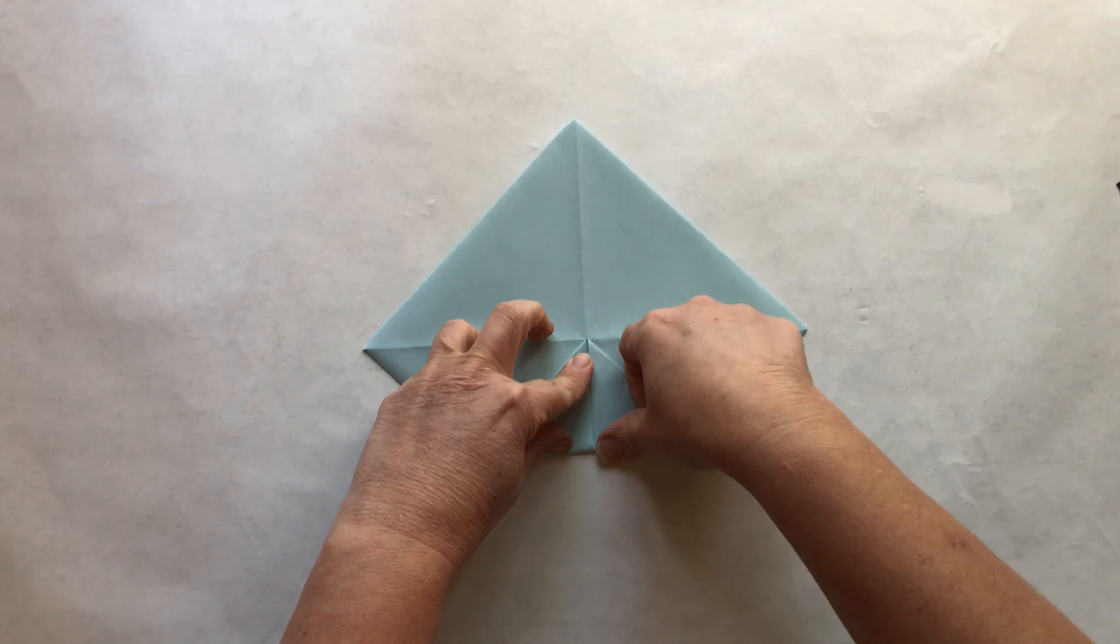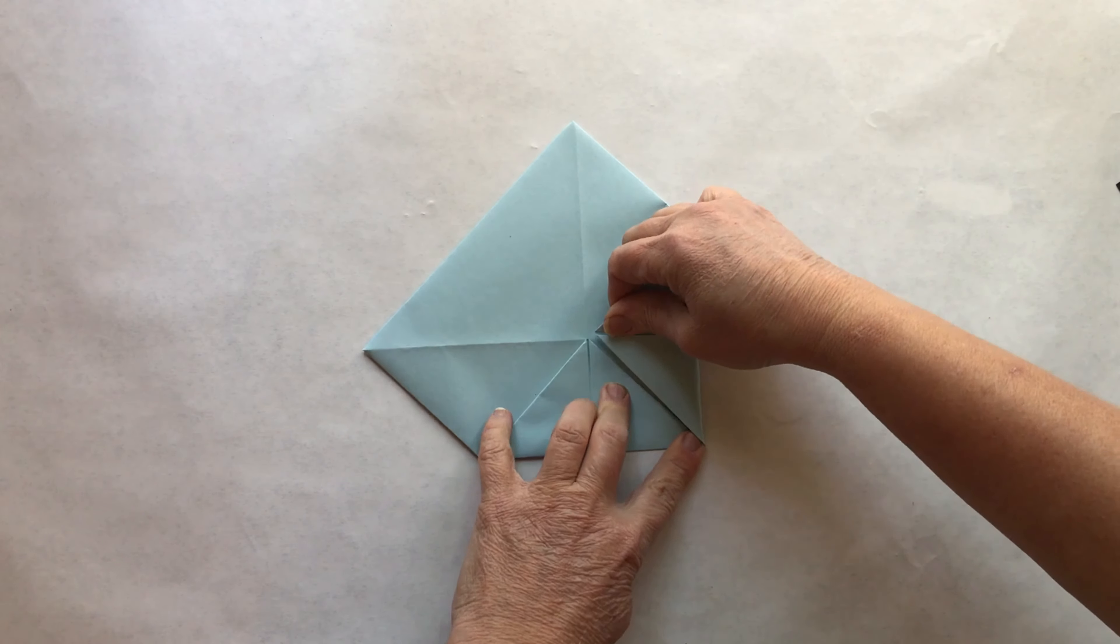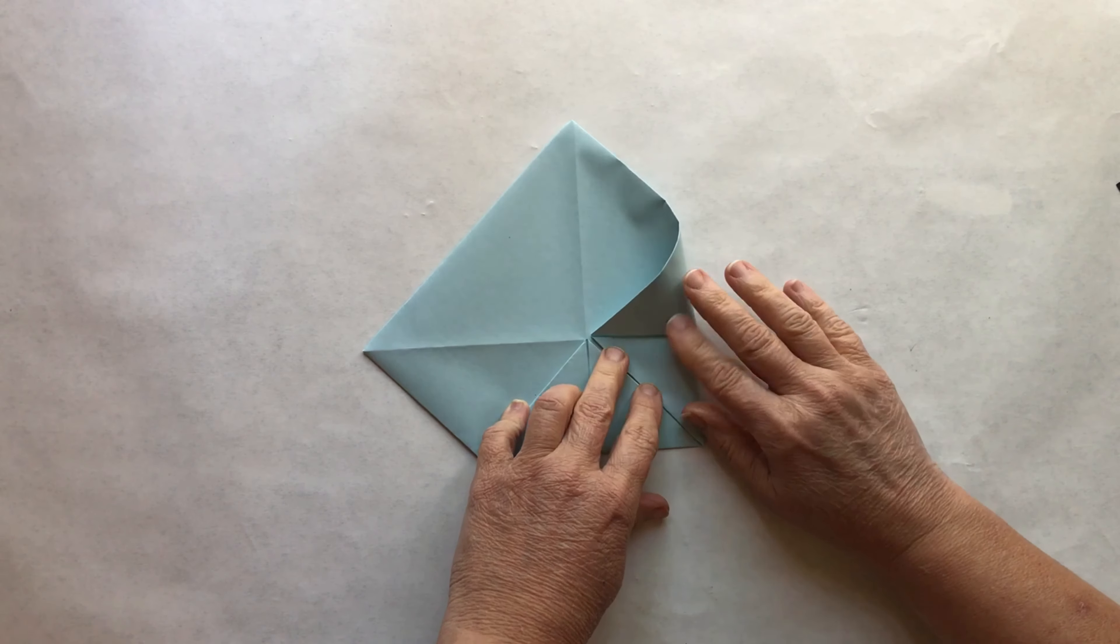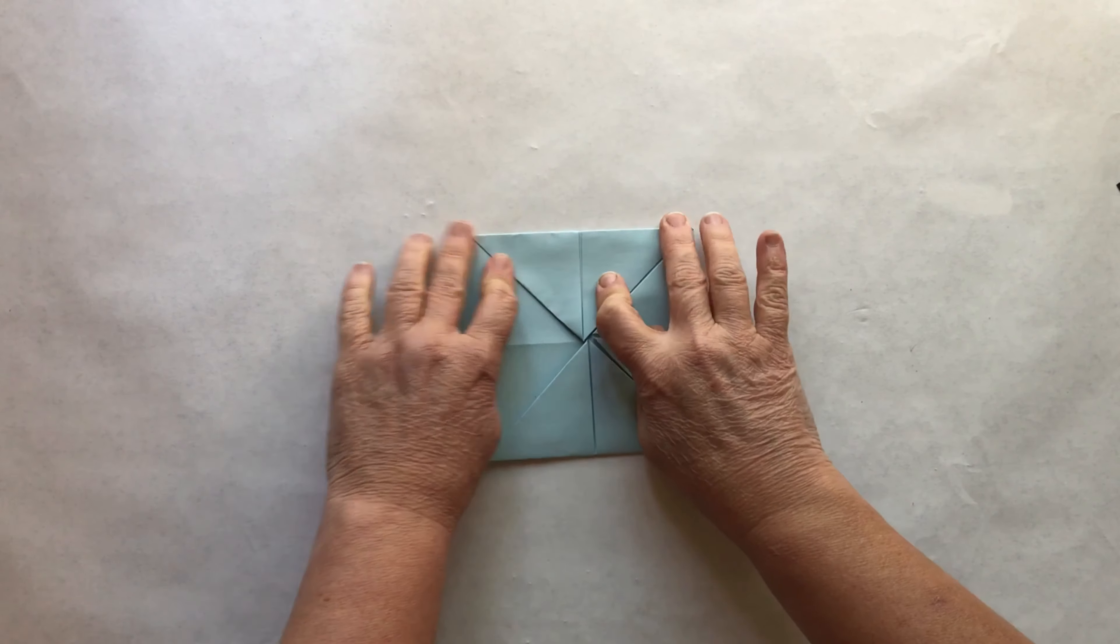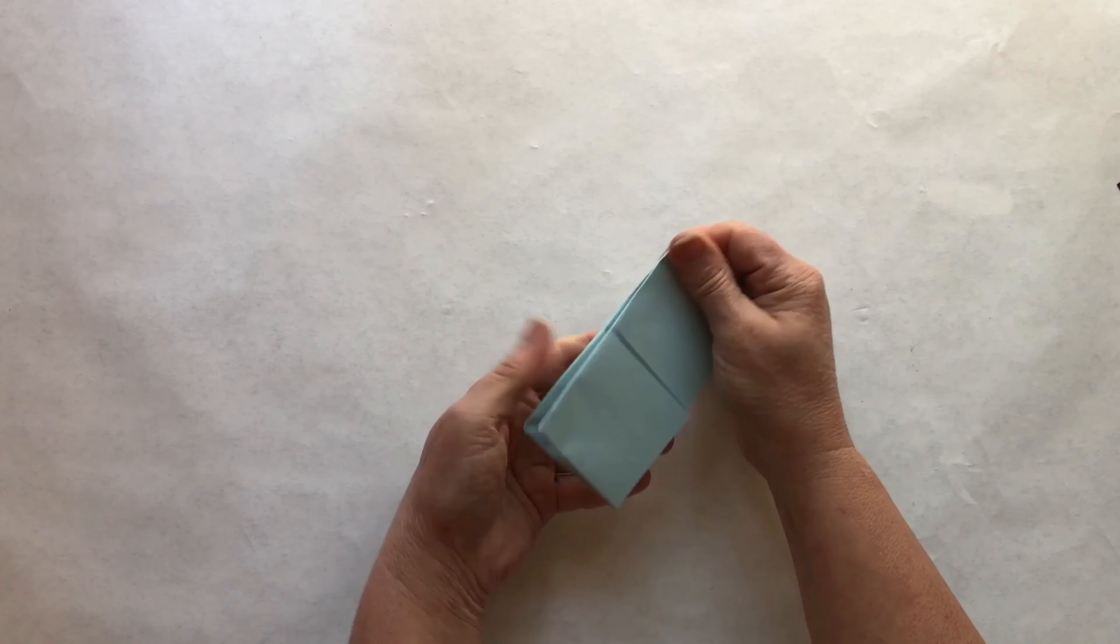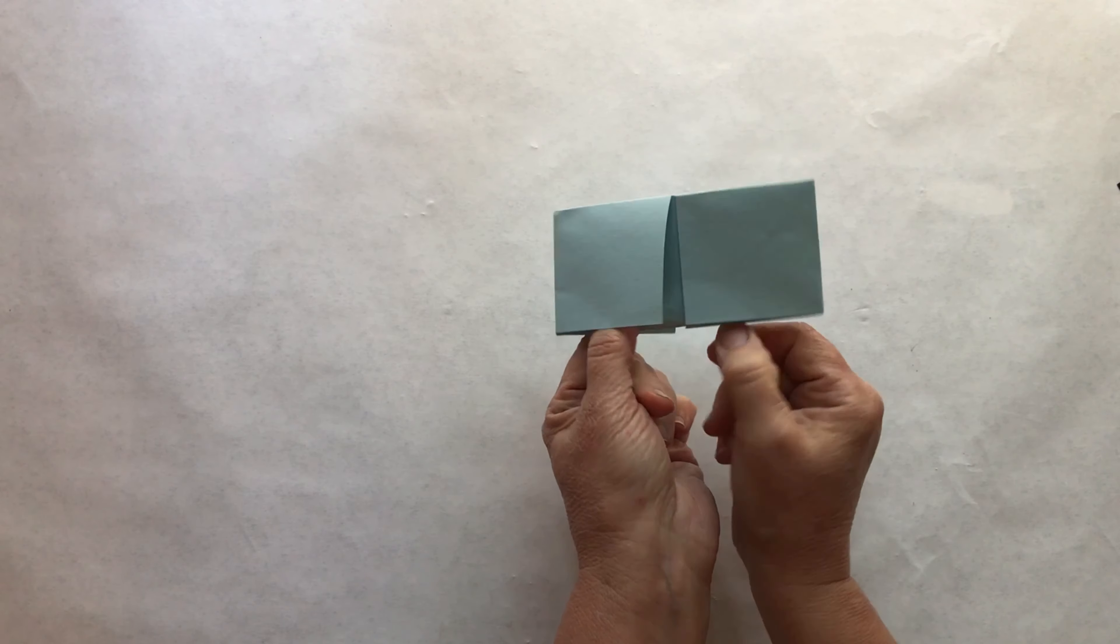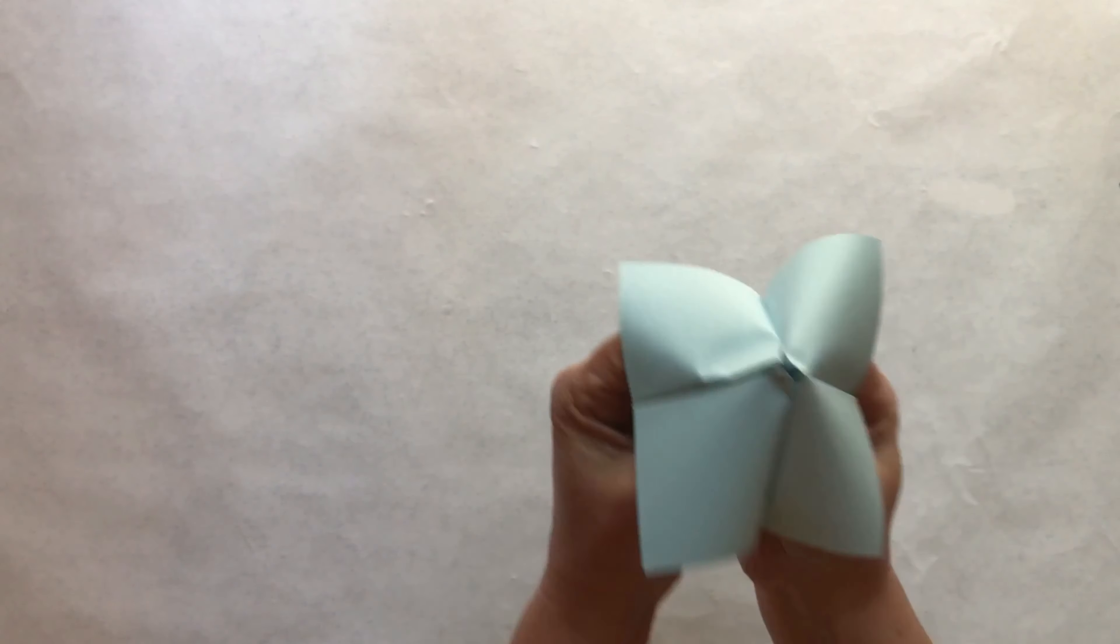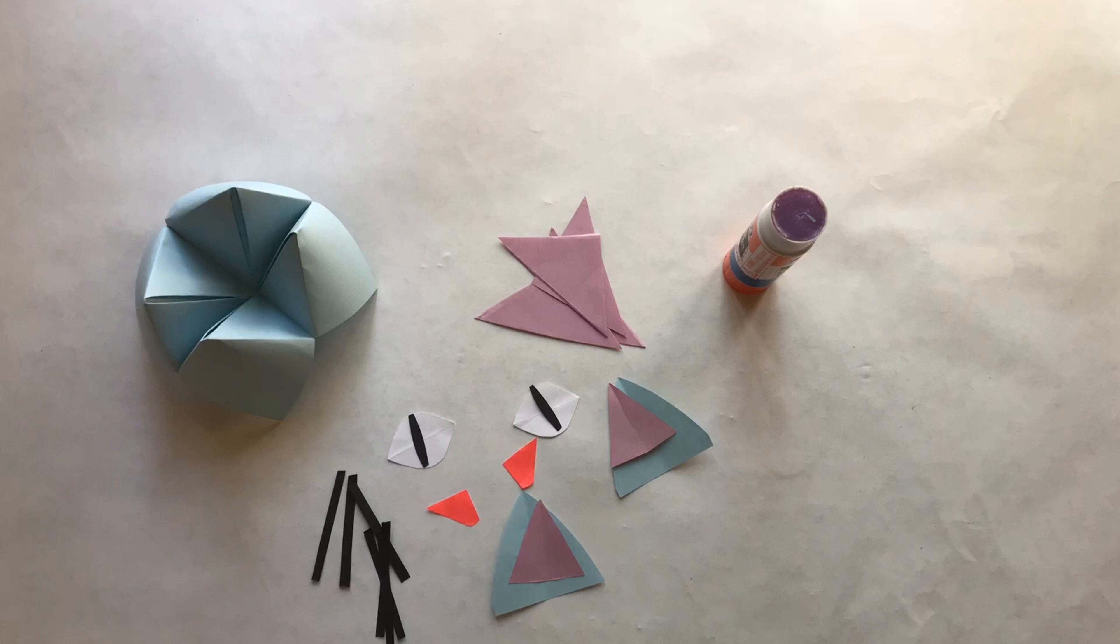Flip the square over, fold each corner to the middle again. Fold in half like so, open and fold the other side in half. Place your fingers in the pockets and press the outer corners into the middle fold. Now to turn it into an animal I've already cut everything out. The pink triangles will go inside the mouth and I've cut eyes, ears, nose and whiskers.